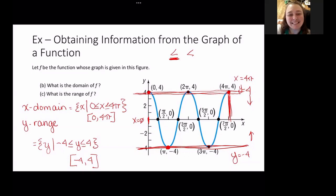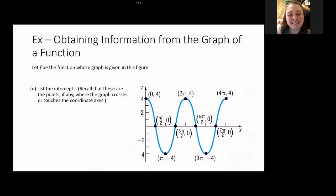Next thing we want to do, let's look at the intercepts. We're going to remember that an intercept is where it crosses or touches any of the coordinate axes. For this one, we have this point, we have this point, this point, this point, and that point.